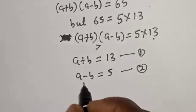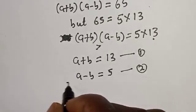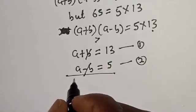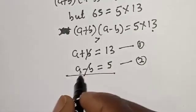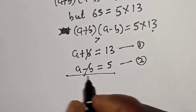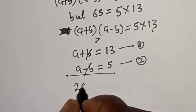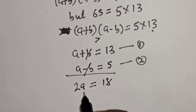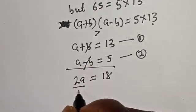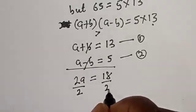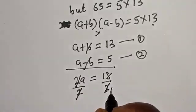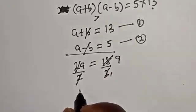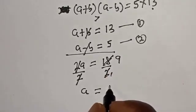Let's add equation 1 and equation 2 together. The b terms cancel. We get 2a equals 13 plus 5, which is 18. Dividing both sides by 2 gives a equals 9.